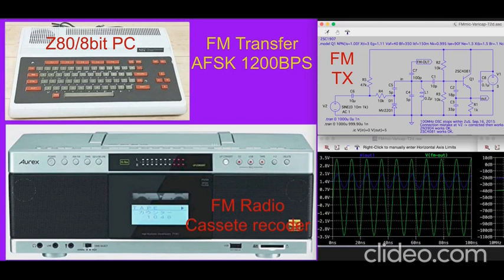Why did the experiments fail in the first data transmission for computer programs via the CMT interface audio FSK modulation at 1200 BPS?